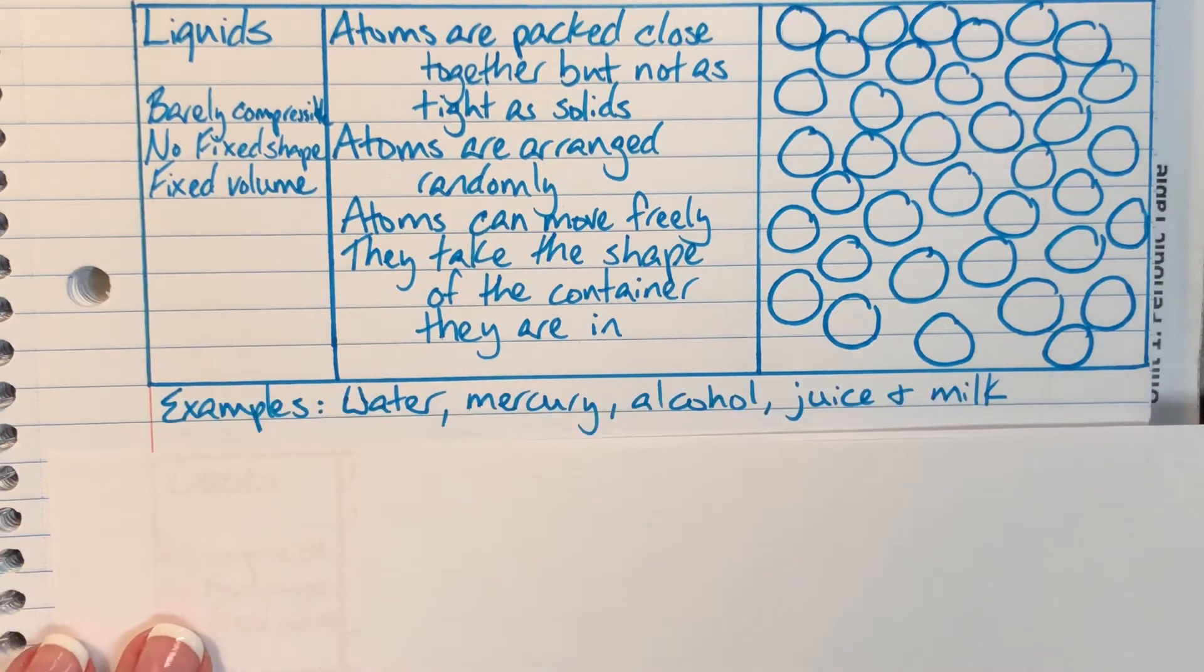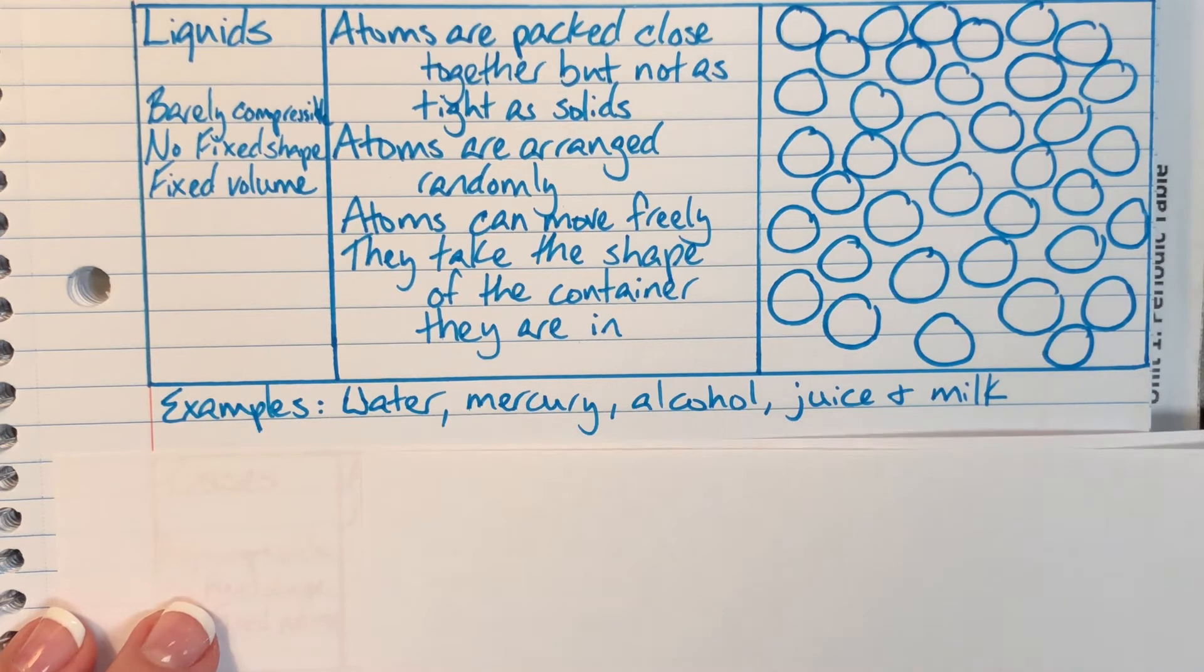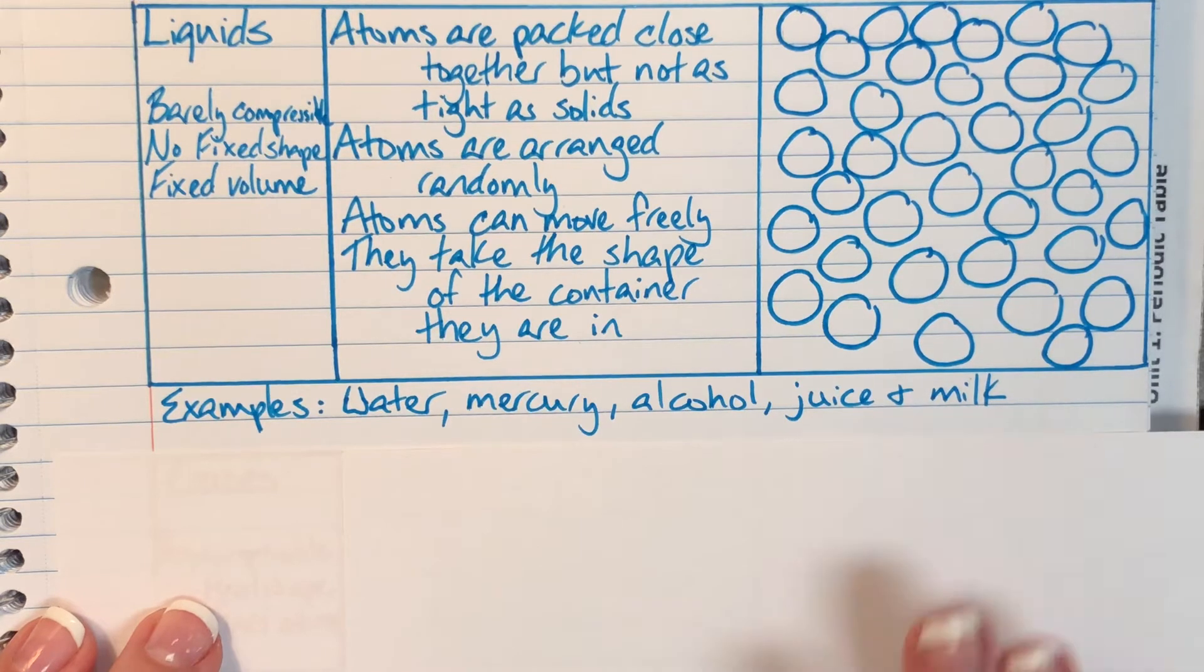Some examples of liquids are water, liquid mercury, alcohol. This could be isopropyl alcohol that you use to clean cuts and wounds or alcohol inside of your normal thermometers. And we also have juice and milk.